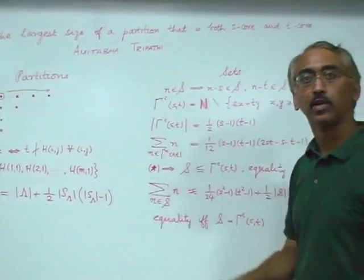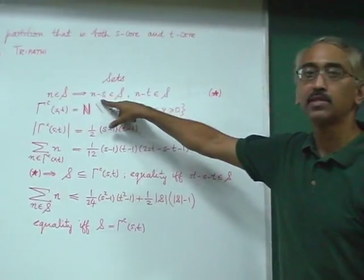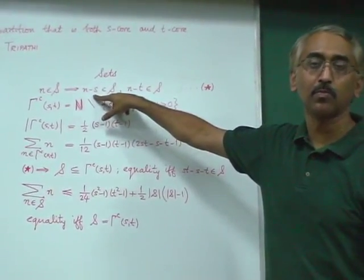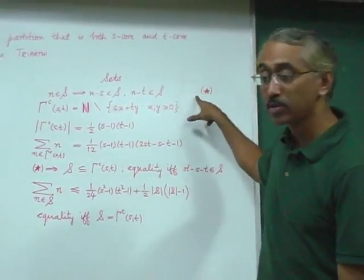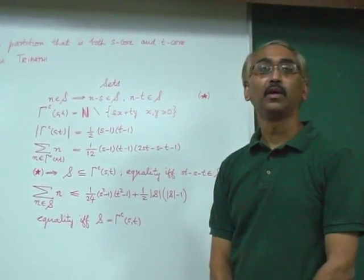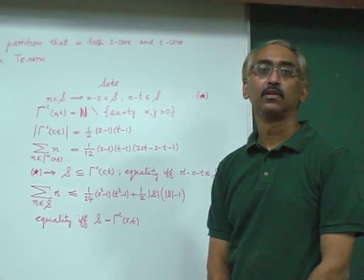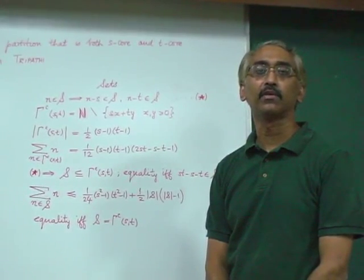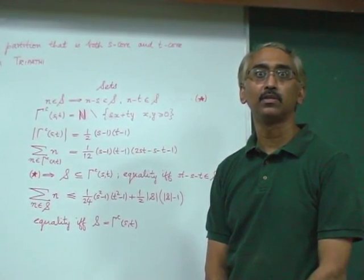Now, let's look at the equivalent problem that has to do with sets S of positive integers with the property St given by equation star. By that I mean, take the set S such that whenever N is in S, then both N-S and N-T are in S.